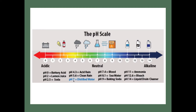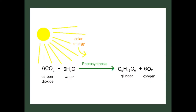Natural water is neutral, but rain is usually about pH 5.6. That carbonic acid falls out of the sky, and that's one of the links between the water and carbon cycles that we'll pick up on later in the module.